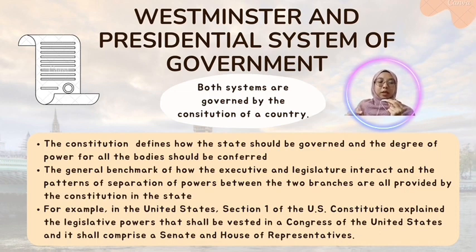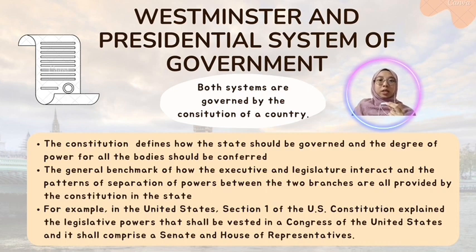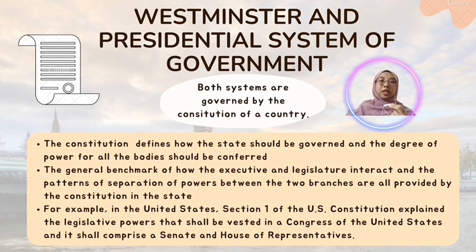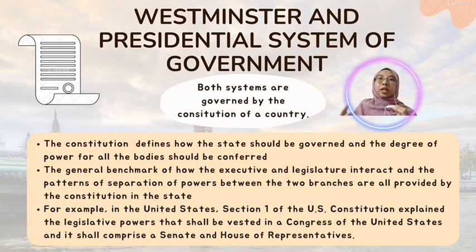To further compare the Westminster system and the presidential system, we will look at the similarities that both systems share. The first similarity is that the bodies or branches under both systems are governed by the constitution of the country. The constitution defines how the state should be governed and the degree of power for all branches. It enshrines a framework for the conduct of government that regulates cooperation among the branches of power. For example, in the United States, Section 1 of the Constitution explains that legislative powers shall be vested in a Congress of the United States, comprising the Senate and the House of Representatives.